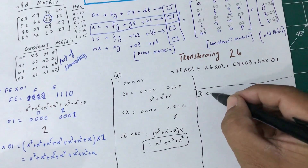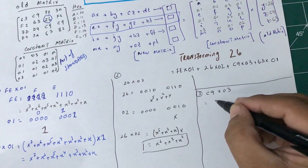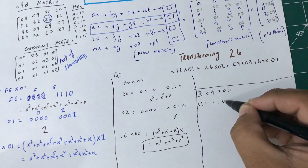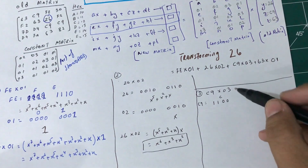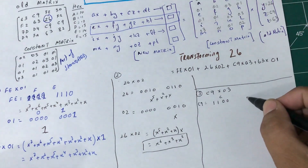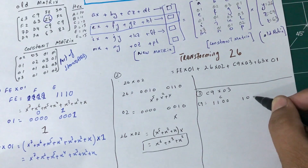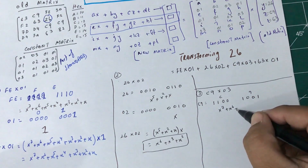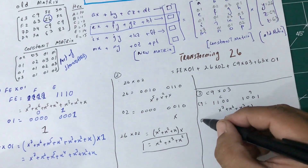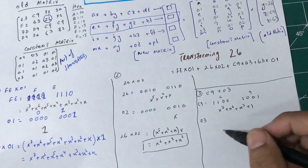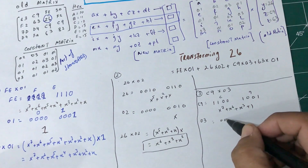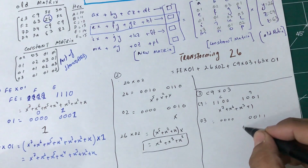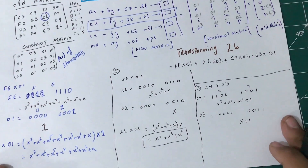Step 3: C9 multiplied by 03. C9 in binary: C is 12 so 1100, and 9 is 1001. In polynomial form: x⁷ + x⁶ + x³ + 1. What is 03? 03 is 0000 0011, which in polynomial form is just x + 1.